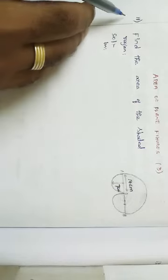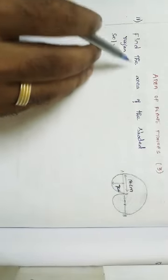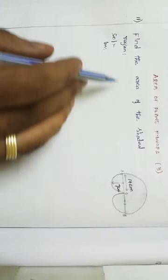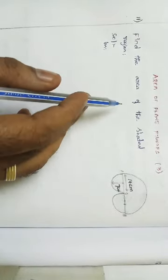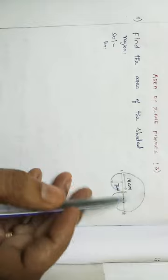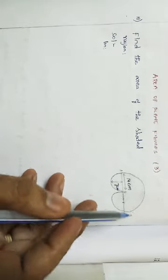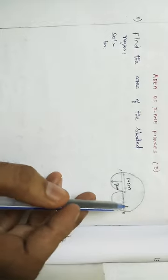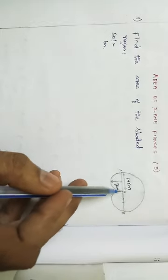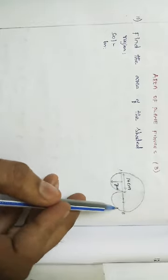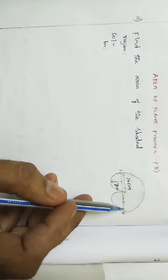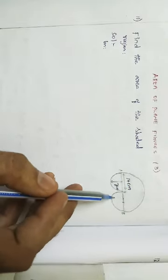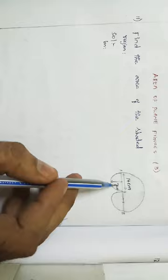Hi students, today we are going to see concept number 5, sum number 11: find the area of the shaded region. So what shapes are we having? We are having a semicircle — one bigger semicircle and two smaller semicircles. So we have three semicircles in total: one bigger semicircle and the remaining two are the same smaller semicircles.